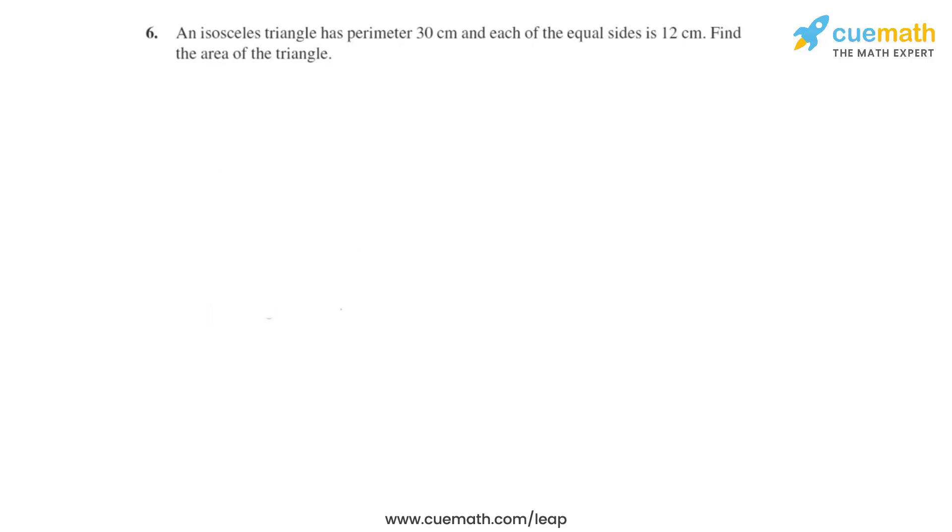Question number six says that an isosceles triangle has a perimeter of 30 centimeters and each of its equal sides is 12 centimeters. We have to find the area of this triangle. So let's first draw a triangle. Two of its equal sides are 12 centimeters and 12 centimeters, and let the third unknown side be x centimeters.